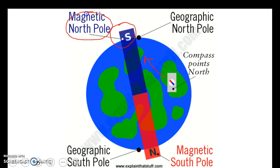So the magnetic north pole and the geographic north pole are different, and the geographic south pole and the magnetic south pole are different based on the tilt of the Earth and the rotation.